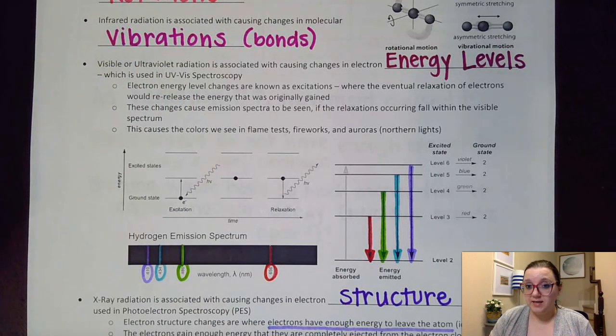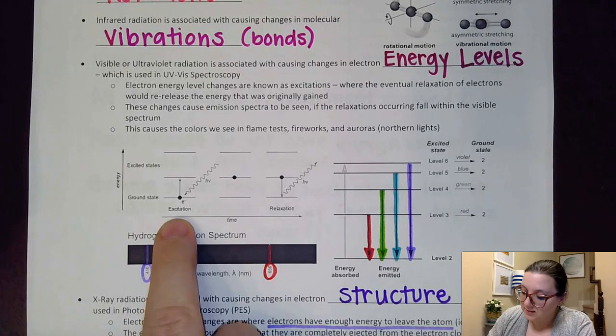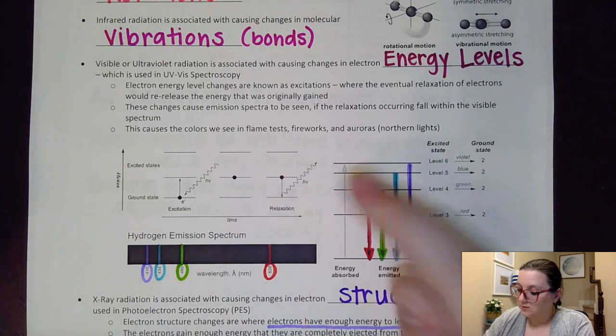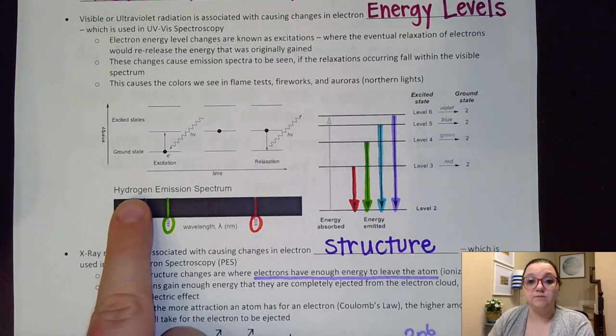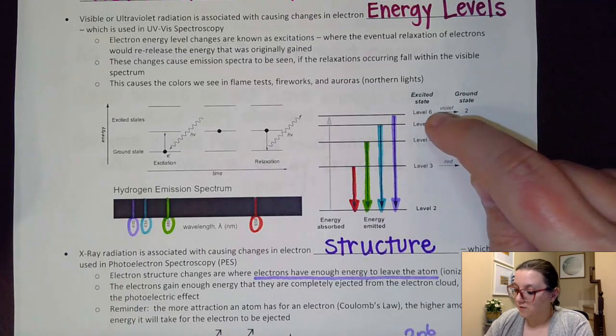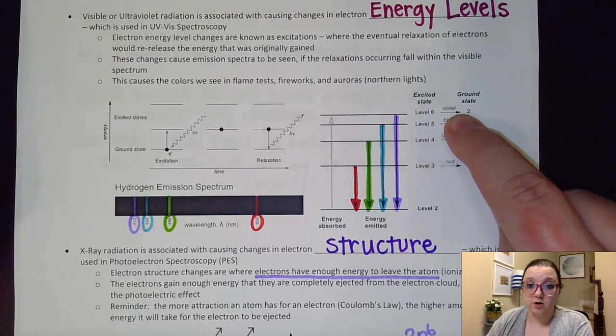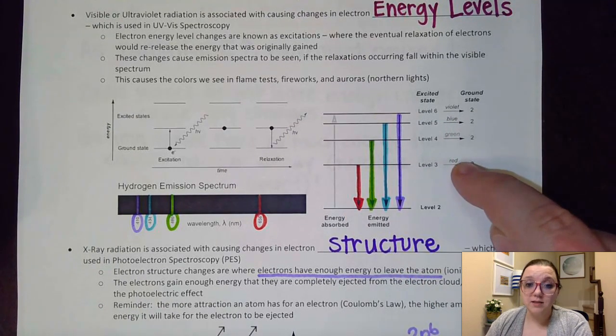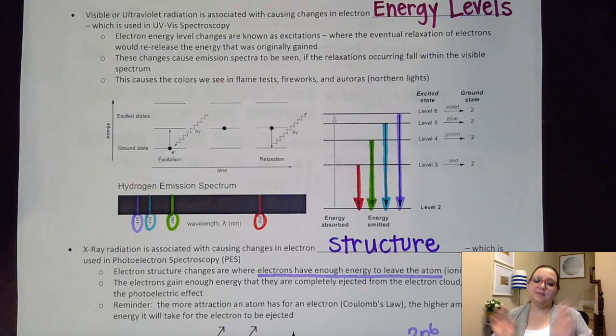Now, the more energy I gain, the higher jump I would have, which means the greater fall I would have. So when that excitation happens, when I intake that energy and I jump up, it can't stay excited forever, so eventually it falls. And the bigger the fall that I have, the more energy I would end up releasing. So you notice here, this is the emission spectrum for specifically hydrogen. In hydrogen, you can have a fall from level six down to level two that releases a violet light. However, you notice a shorter fall from three to two would only release red light, which is a lower energy light.